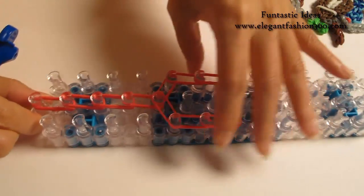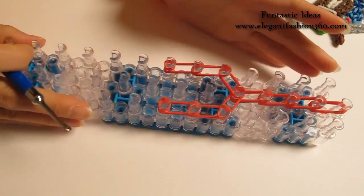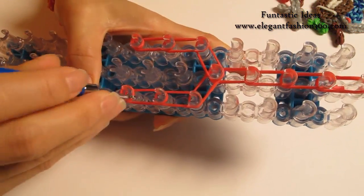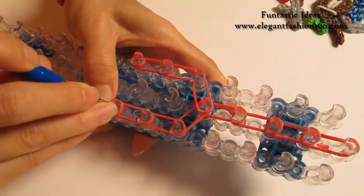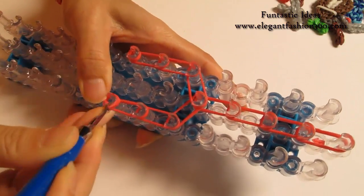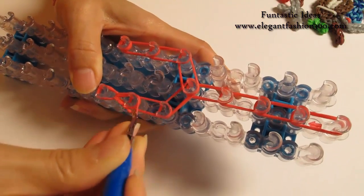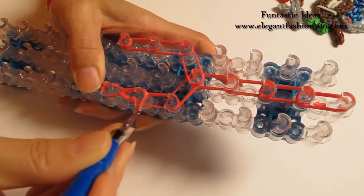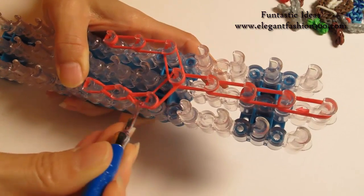Now we're going to rotate our loom and start looping. Hold on to your cap band. Grab the bottom 2, hook it to the next one. Grab the bottom 2, hook it to the next one.